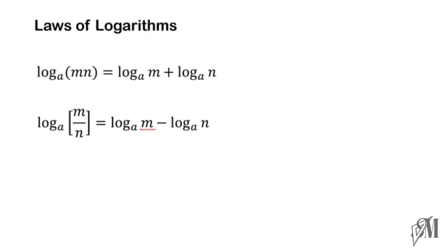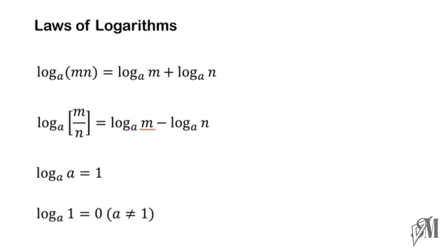The third law is that log base a of a equals 1 — if the base and the value with the log symbol are the same, the answer is 1. The fourth law is that log base a of 1 is always 0 — whatever the base is, if you find the logarithm of 1, the answer is always 0, given that a cannot be 1.